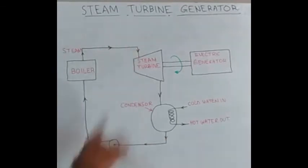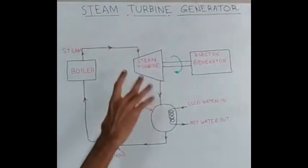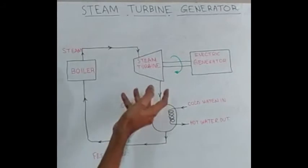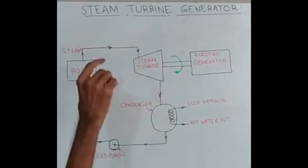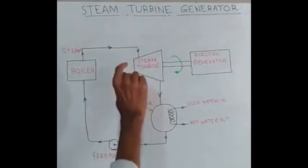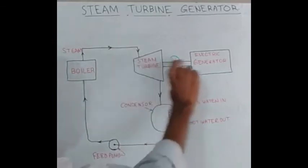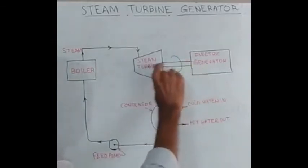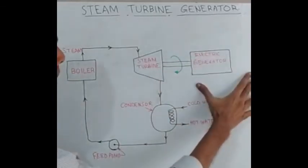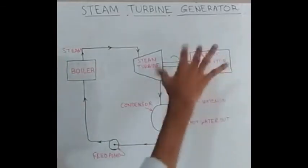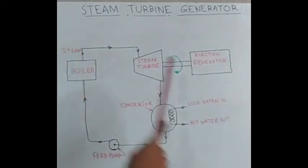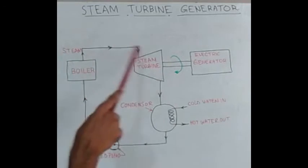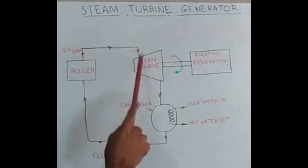There are blades — runner blades in the rotor. If you look at the rotor, it is connected to a short generator, and then it is an electric generator producing electricity. This steam turbine is in this work.